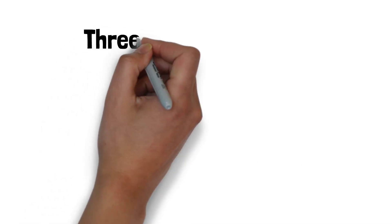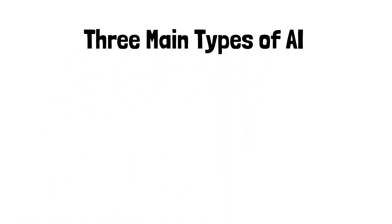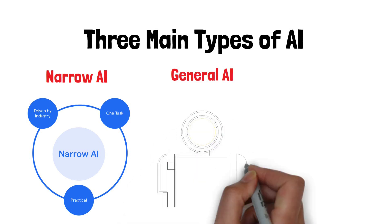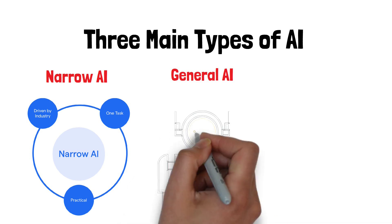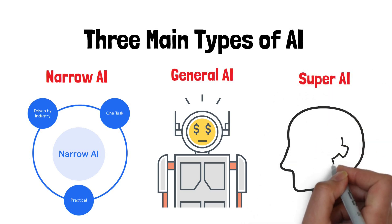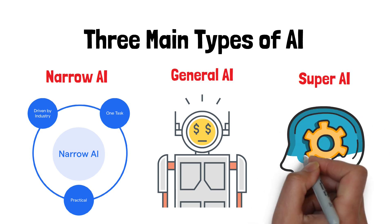Right now, there are three main types of AI. We've been talking about narrow AI, systems that excel at specific tasks. Then there's general AI, which could handle any intellectual task humans can do, but we're not there yet. And theoretically, super AI, which could surpass human intelligence entirely. But even with today's narrow AI, imagine the possibilities.